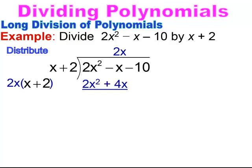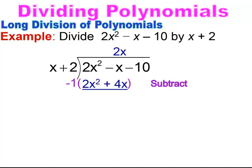The next step is to subtract. When you subtract an expression, you have to be really careful — you're really distributing a negative 1 to the entire expression, so you're changing the signs of everything. You end up getting a negative 2x squared, and that plus 4x changes to a negative 4x. So when you're doing long division of polynomials, don't forget this step: because we're subtracting, you have to change the signs of everything.